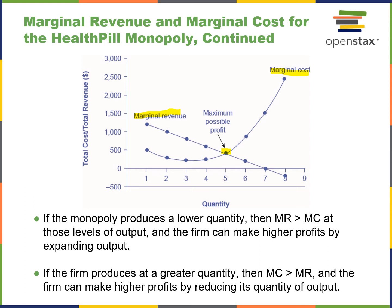If the monopoly produces a lower quantity, marginal revenues are greater at those levels of output and it can make higher profits by expanding output — moving production, say, from one to five. If the firm produces a greater quantity where marginal revenue is less than marginal cost, a firm can make higher profits only by reducing output. At seven units, they'd be making nothing; at eight, they'd be losing money. So they return to their Pareto-optimal equilibrium point where they can make maximum profit.